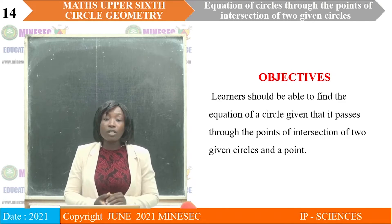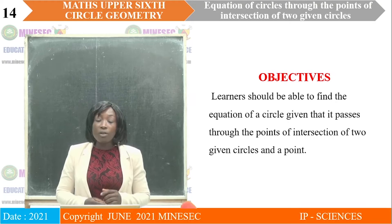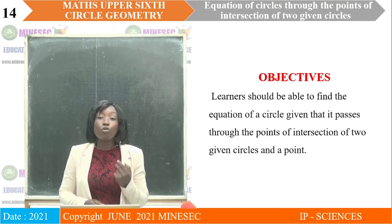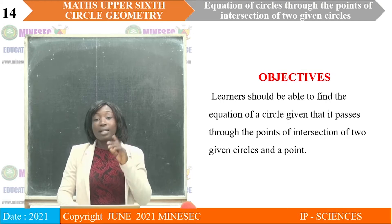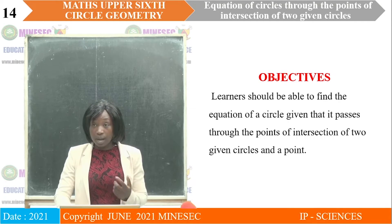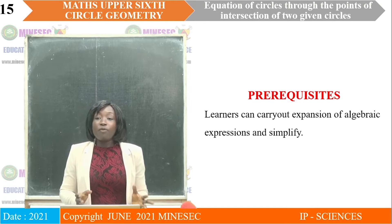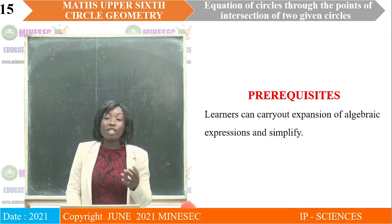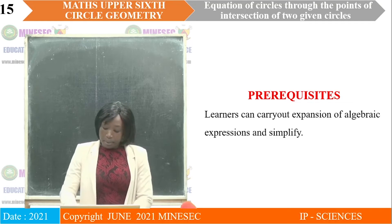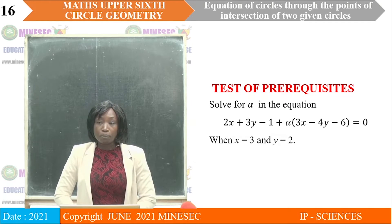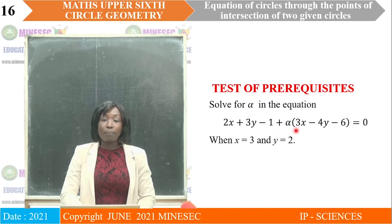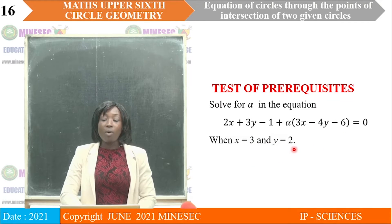As the objective, at the end of this lesson, you should be able to find the equation of a circle given that it passes through the points of intersection of two other circles and a given additional point. For the prerequisite, you are expected to know how to carry out expansion of algebraic expressions and simplify them. Let us test the prerequisite: solve for α in the equation 2x + 3y − 1 + α(3x − 4y − 6) = 0, when x = 3 and y = 2.